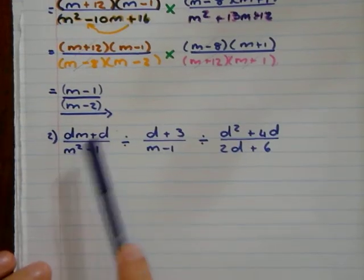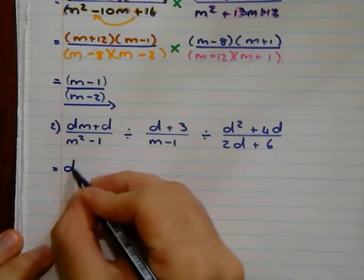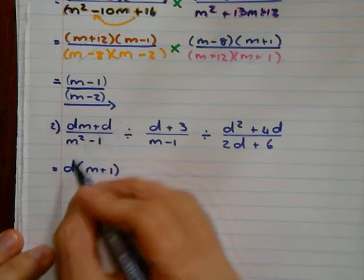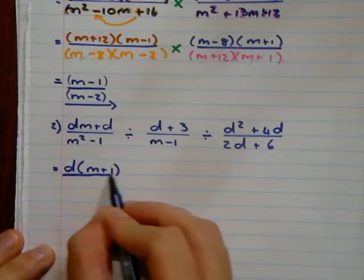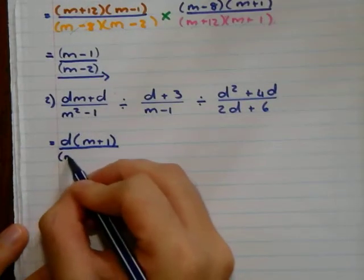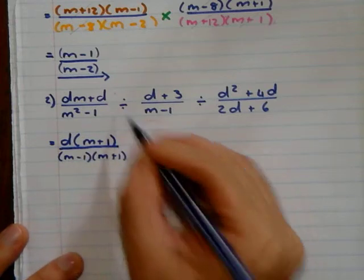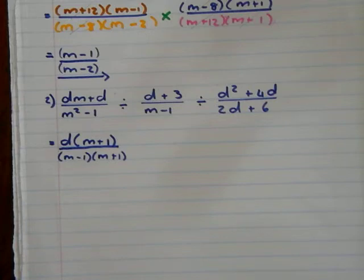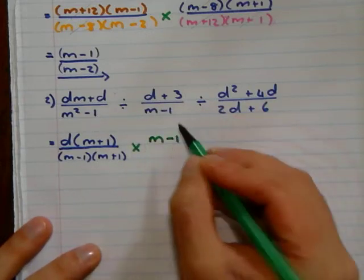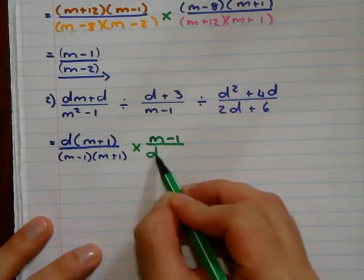Now we simplify where we can. Here we can take out a common factor of D. What's left is M plus 1, because the D is taken out. At the bottom is the difference of two squares, so it's M minus 1 and M plus 1. Die deel maak ek nou a maalteken, so it flips up. M minus 1 is at the top now, and D plus 3 at the bottom.